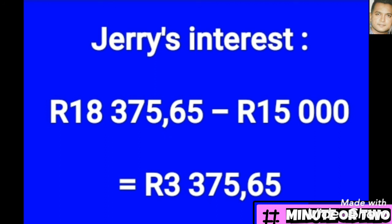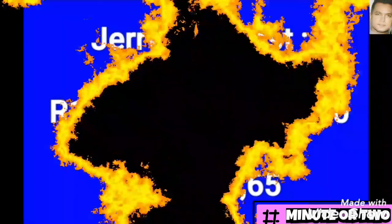For the second question, they ask only for the interest Jerry earned. Knowing the total after three years is R18,375.65, I subtract the initial amount I started with, and the remainder gives me the interest earned, which is R3,375.65.